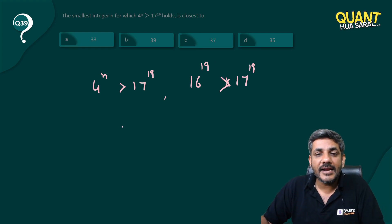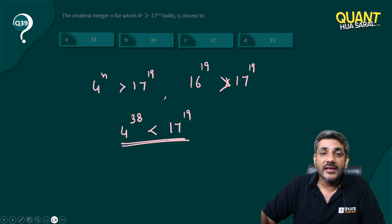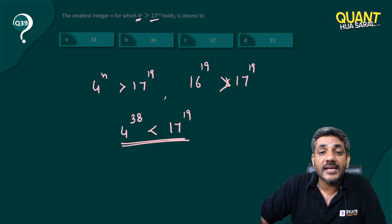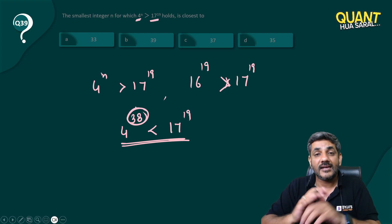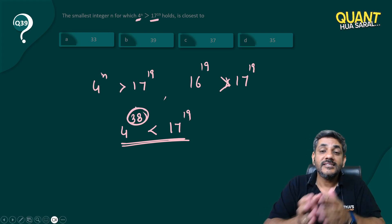And 16^19 can be written as 4^38, so 4^38 < 17^19. If I need a power of 4 which is greater than 17^19, the power has to be greater than 38, right? Our 38 is less than that.